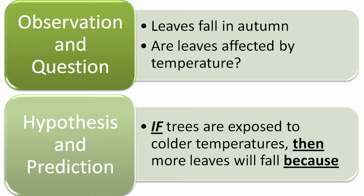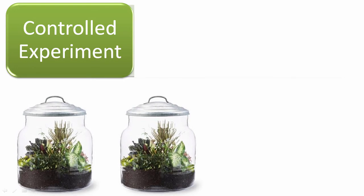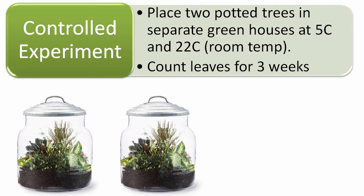That's a great question and a great potential answer, so let's test it. We're going to develop a controlled experiment. We're going to take two potted trees — or maybe groups of trees — and they're going to be as identical to each other as possible. We're going to put them in two different greenhouses where we can control temperature. Some are going to be in a 5 degrees Celsius room, just above freezing, and some are going to be in 22 degrees Celsius, about room temperature. We're going to count the leaves over the course of three weeks. We've got two identical systems, except the experimental group is at a cold 5 degrees Celsius and the control group is at 20 degrees Celsius.